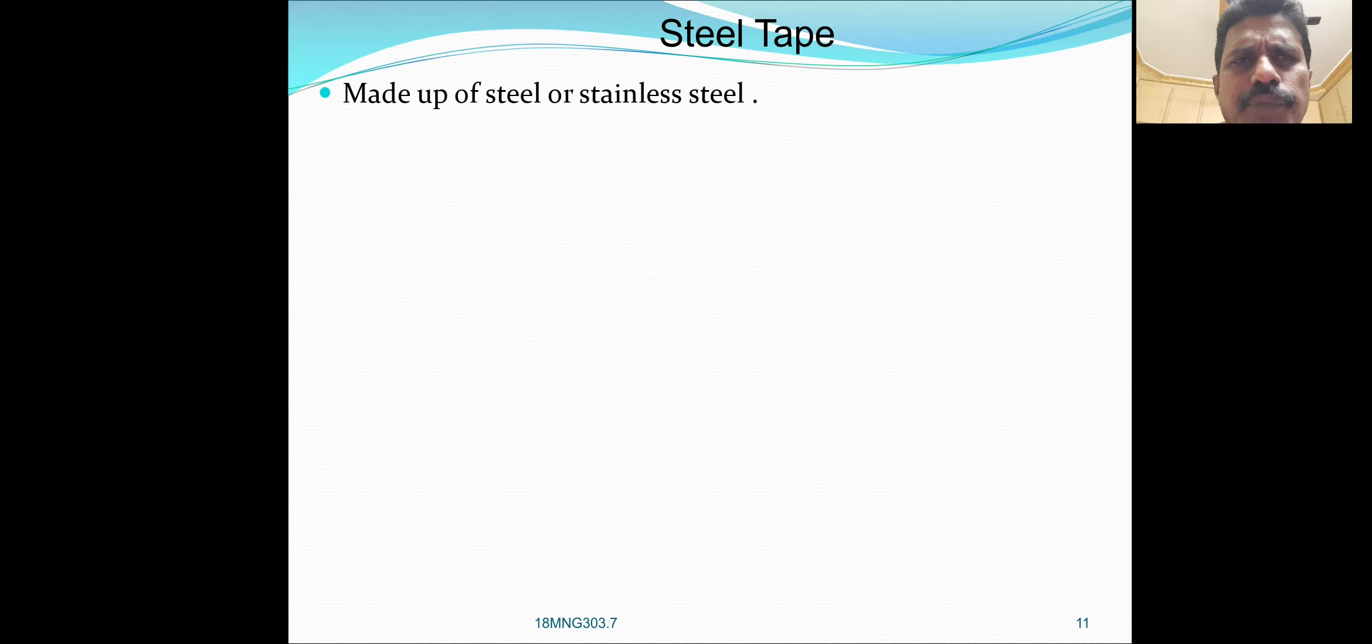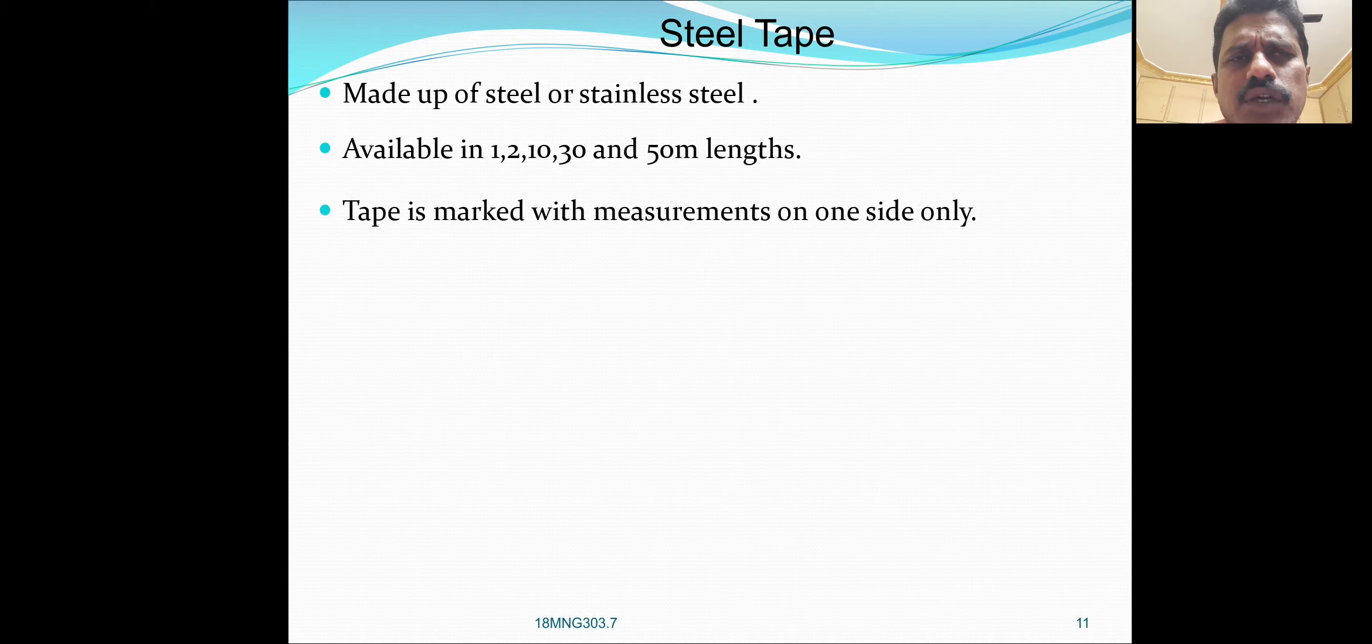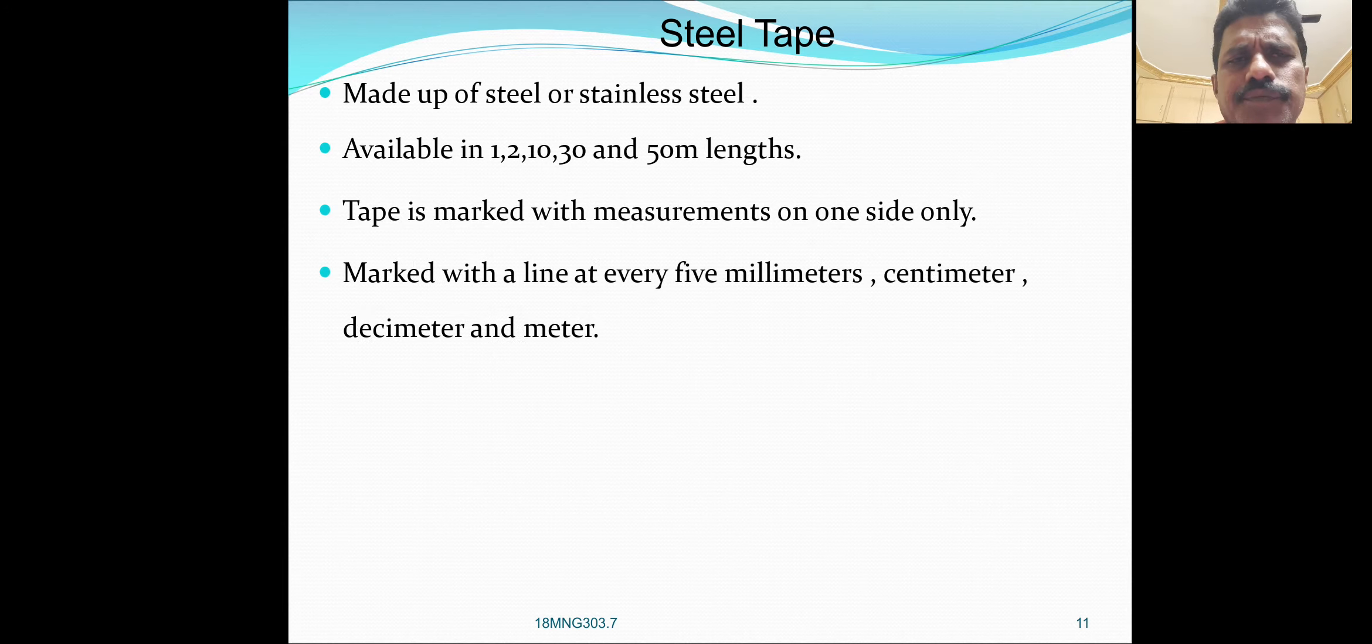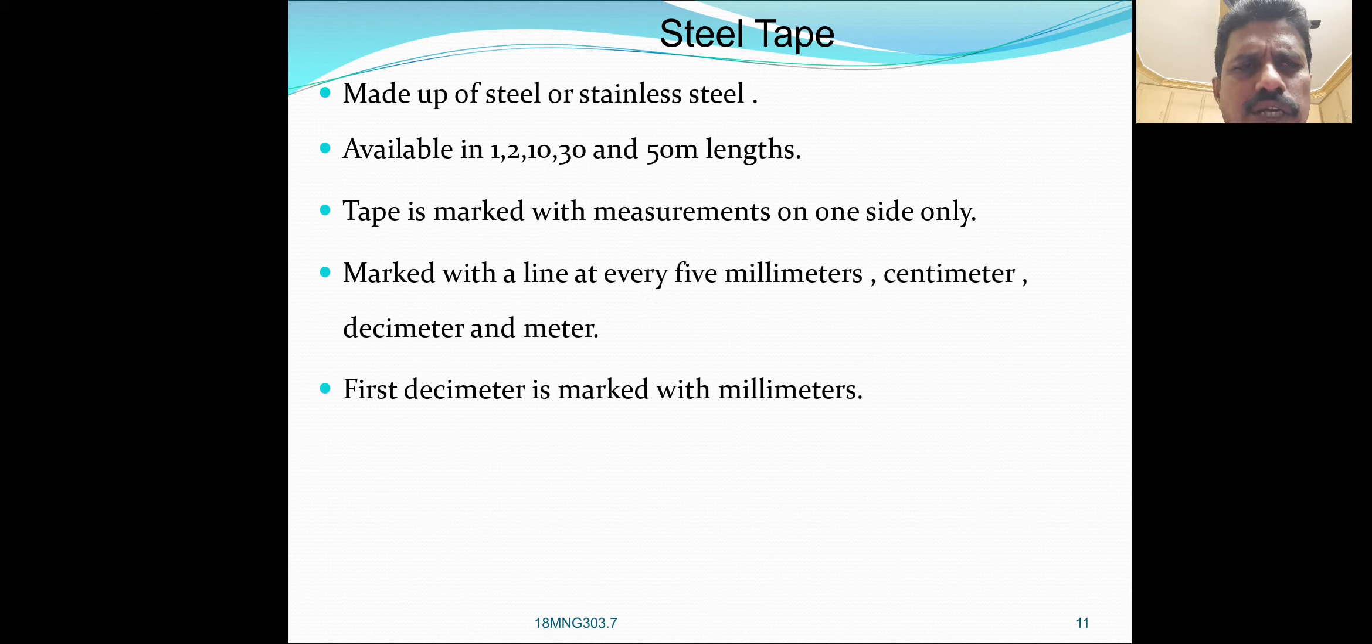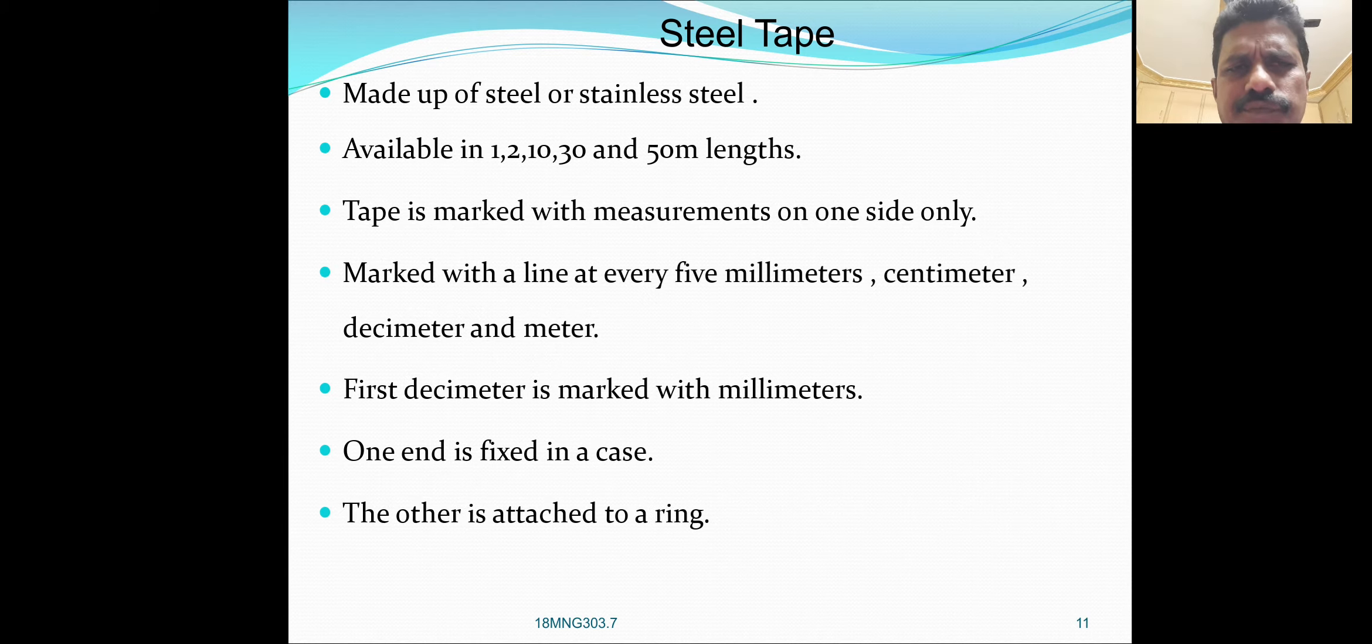Steel tape made up of steel or stainless steel, available in 1, 2, 10, 30 and 50 meter lengths. The tape is marked with measurements on one side only. Marked with a line at every 5 millimeters, centimeters, decimeters and meters. First decimeter is marked with millimeters. One end is fixed in a case, the other is attached to a ring.